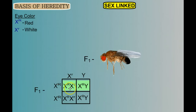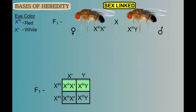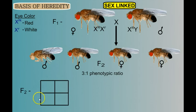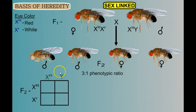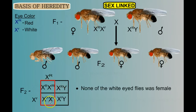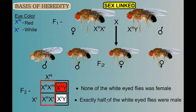Now let's move on to our F2 generation. We cross two of our F1 flies — a female with a male. We have a heterozygous female and a red-eyed male. Pause the video, build your Punnett square, and see why the results happen. I'll put the heterozygous female on one side and the male across the top, then fill in the square. We get a 3 to 1 ratio of red eyes to white eyes. It also becomes very obvious why none of the white-eyed flies are female, and why exactly half of the males have white eyes and half have red eyes.